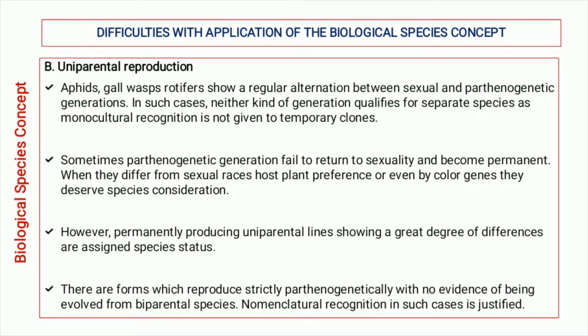If there are sufficient differences between the sexually reproducing population and the parthenogenetically reproducing population, we can categorize them as separate species. If certain forms only reproduce parthenogenetically and their evolutionary history provides no evidence of sexual reproduction, then the application of the biological species concept to such forms is justified.